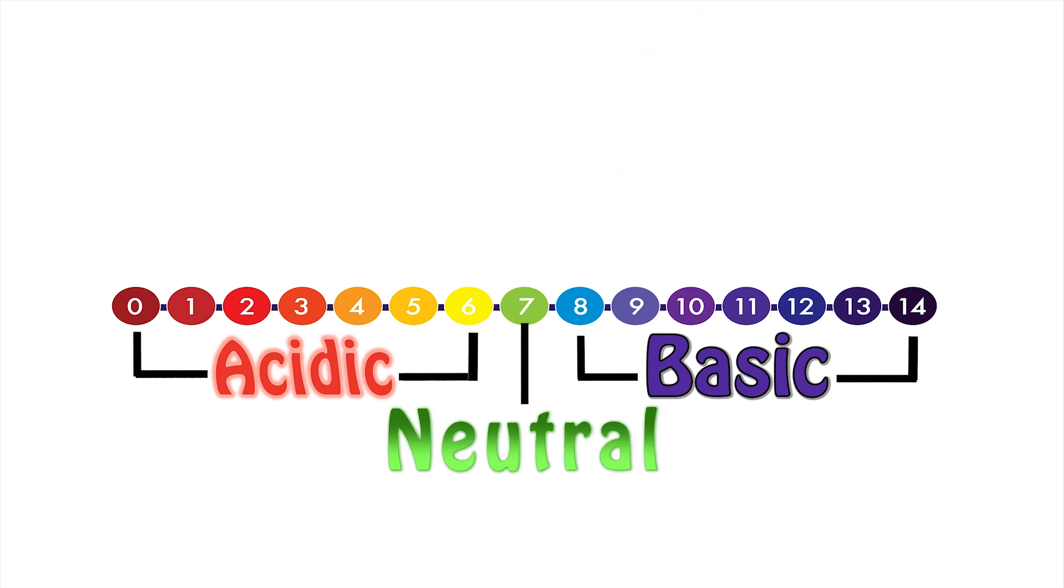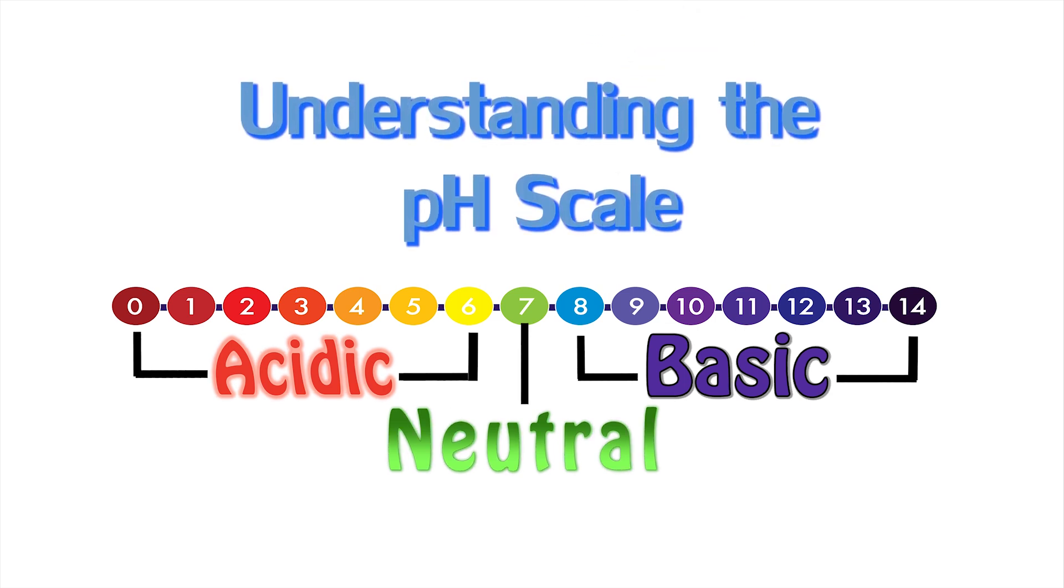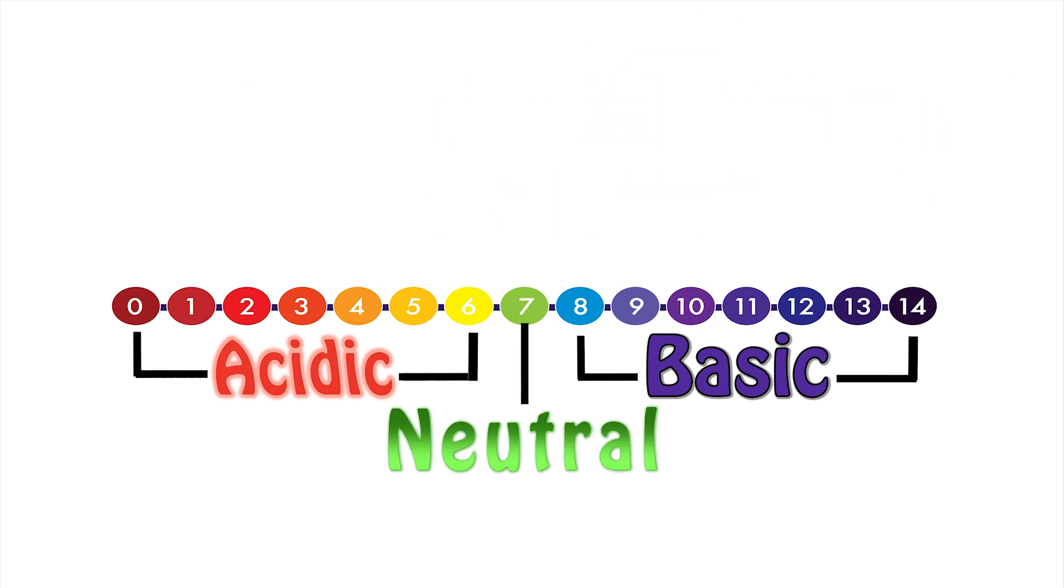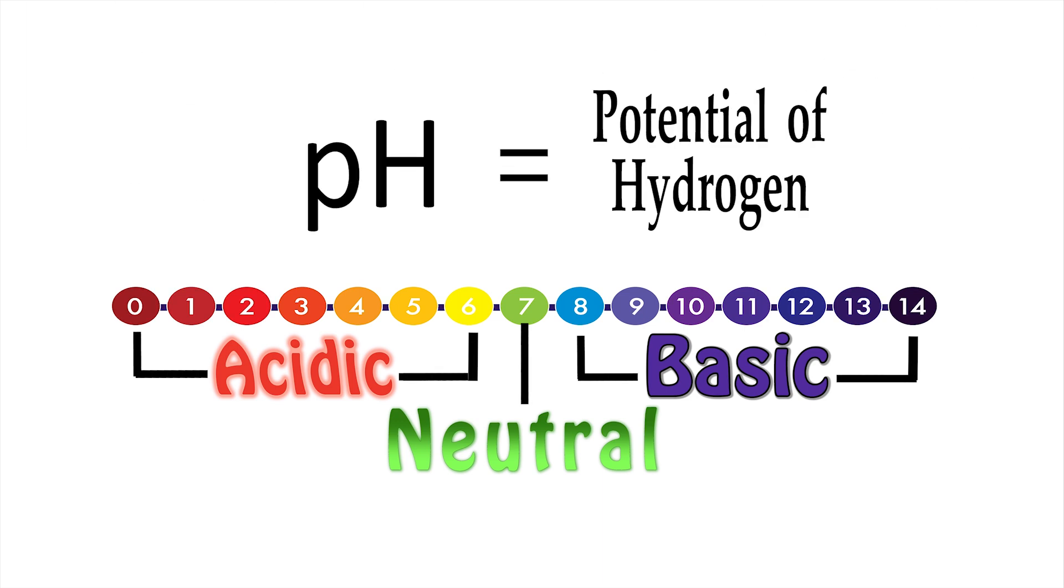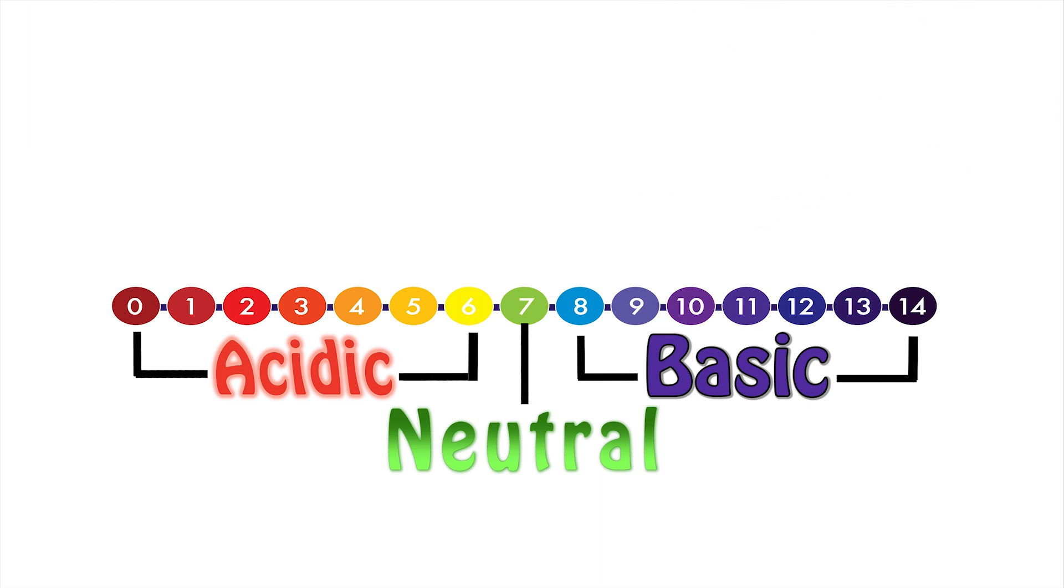To get started, we will review how to read and understand the pH scale. If you remember in chemistry, pH stands for the potential of hydrogen, and the pH scale is used to measure whether a liquid is acidic or basic.